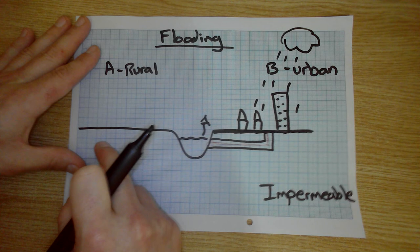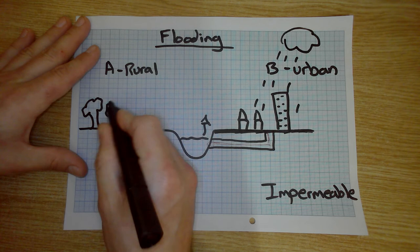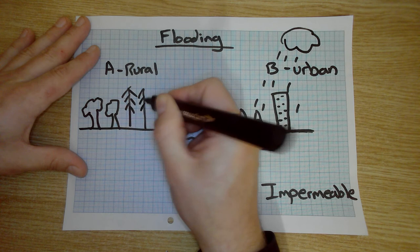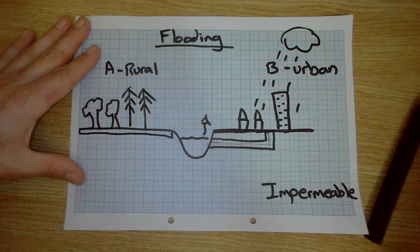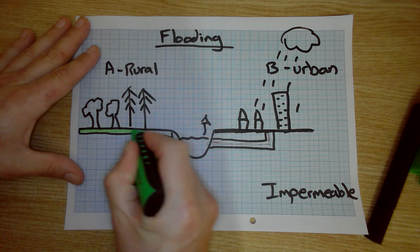On the opposite side, A, we've got a rural area. So rural areas have got lots of trees like this. Alright, the ground is going to be covered in, I don't know, grass and soil. So here's a bit of grass.